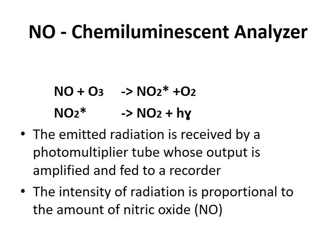The nitric oxide reacts with ozone to form nitrogen dioxide in the excited state and oxygen. The excited nitrogen dioxide reverts to the ground state, emitting radiation received by the photomultiplier tube, amplified, and fed to the recorder. The intensity of this radiation is proportional to the amount of nitric oxide.